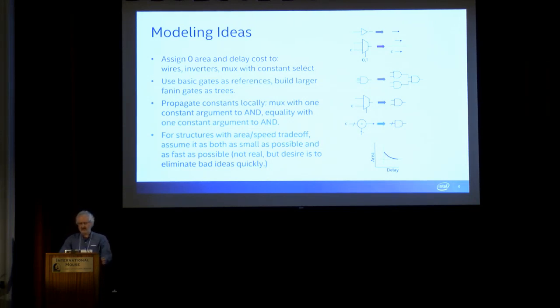Equality operators are also going to turn into AND gates—the number of inputs is the number of inputs in the things you're comparing together. For more complicated structures, there could be area and speed trade-offs, so you can pick some point along the area and delay curve.